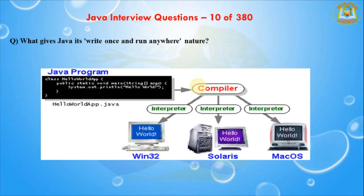Next I am going to discuss about what gives Java its write-once, run-anywhere nature. The Java compiler compiles a Java program and converts it into bytecode, which is a highly optimized set of instructions designed to be executed by the JVM. Because of the bytecode, a Java program can run on a wide variety of platforms. The JVM is platform-dependent — its implementation differs from platform to platform — but all JVMs can execute the same Java bytecode. You can write a Java program on any machine, compile it, and the generated bytecode can run on any machine — whether Windows, Solaris, or Mac.